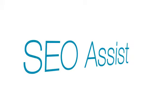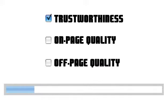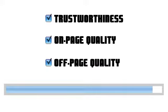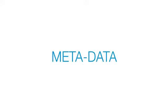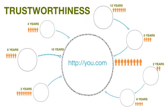SEO Assist measures the three most important metrics to improve the search rank: trustworthiness, on-page quality, and off-page quality. Trustworthiness is measured using URL and domain-level metadata such as the age, the traffic, the links to the target domain, and the domain of all the links forming the web graph.